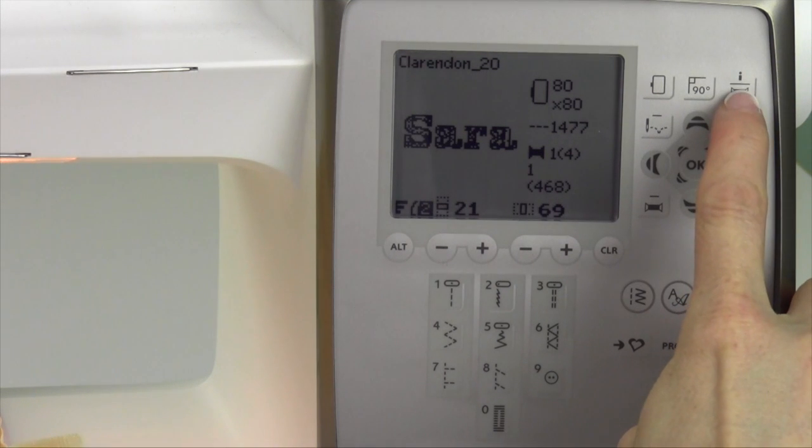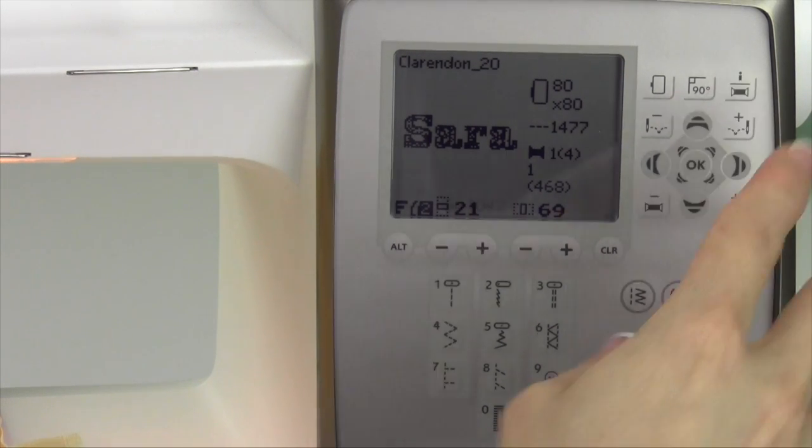The embroidery information button is up in the top right corner here. It has an eye and also a picture of a spool of thread. Touch that one time,